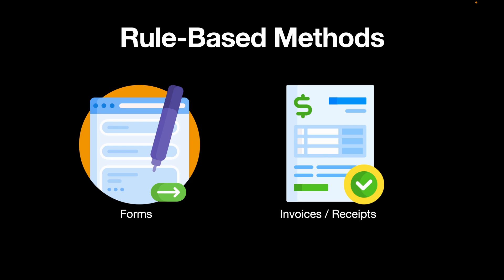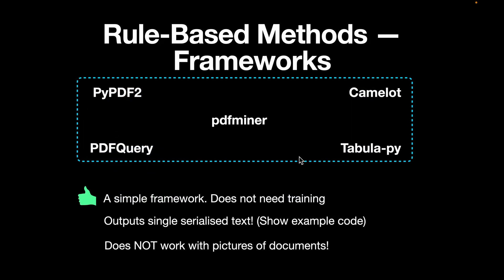Rule-based methods are also referred to as template-based. They follow predefined rules to extract information based on position or patterns. A good example is forms, which have a specific template within which we define what to extract. Invoices and receipts are also very good candidates for rule-based methods. Some Python frameworks available for rule-based parsing include PyPDF, PDF Miner, Camelot (specifically for tables), and Tabula, which is mostly a Java framework but has a Python wrapper.